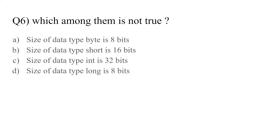Question number six: which among them is not true? We have four statements — the size of data type byte is 8 bits, size of short is 16 bits, size of int is 32 bits, and size of long is 8 bits. Byte is 8 bits — true. Short is 16 bits — true. Int is 32 bits — true. Long is 64 bits, not 8 bits. So statement D is false. The answer is D: size of data type long is 64 bits, not 8 bits.